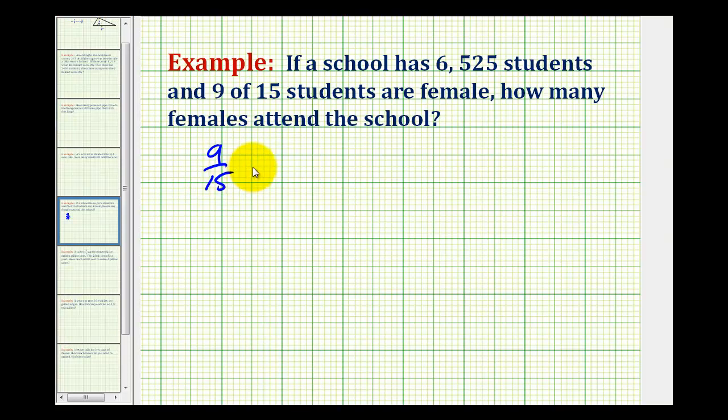So we want 9/15 of the total students, which is 6,525. And of means to multiply. So to determine 9/15 of 6,525, we need to multiply 9/15 and 6,525.